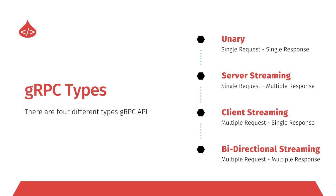The second type is Server Streaming. In server streaming, the client sends a single request to the server, and the server can send back multiple responses — like streaming data continuously. The server can send 10, 20, or 100 responses, and the client can receive all of them, while the client only sends one single request.